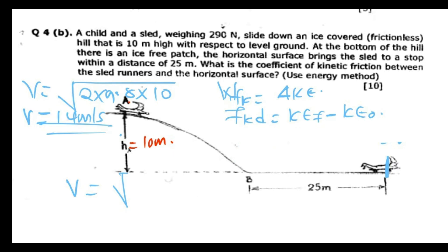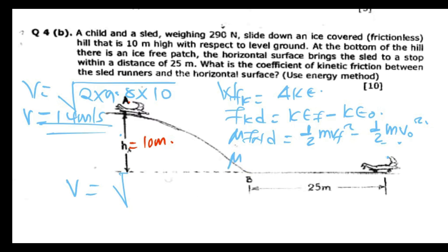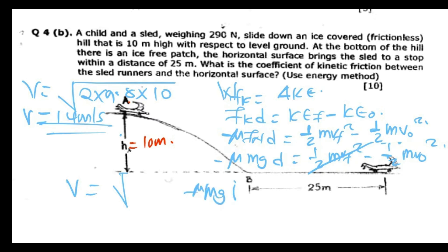The friction force is mu times the normal force times distance D. This equals half M V_final squared minus half M V_initial squared. The work done by friction is negative, and the normal force equals mg. Since the final velocity is zero, the first term cancels, leaving: negative mu times mg times D equals negative half M V_initial squared.